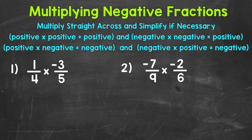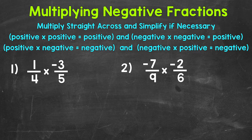Multiplying different signs will equal a negative result, meaning positive times a negative or a negative times a positive will give us a negative result. On the other hand, multiplying the same signs will give us a positive result, meaning positive times positive or negative times negative will give us a positive result.